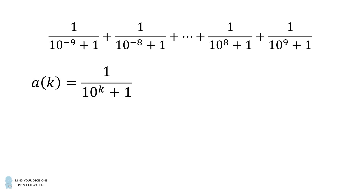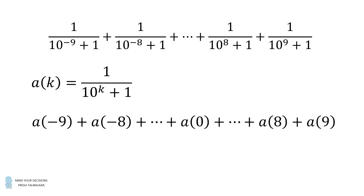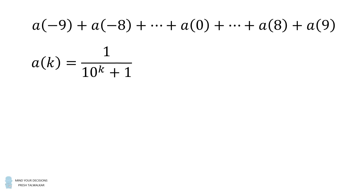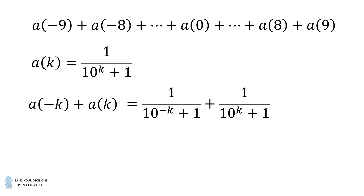Define a_k as equal to 1 divided by 10 to the power of k plus 1. Let's now try and evaluate the sum in the following fashion. The first term is a of negative 9, the second term is a of negative 8, then in the middle we have a_0, and the last two terms are a_8 and a_9. So what we will do is pair off a_{-k} with a_k.